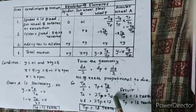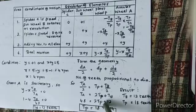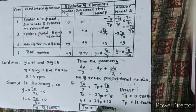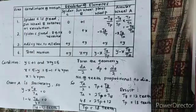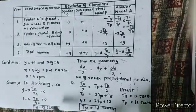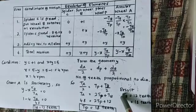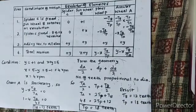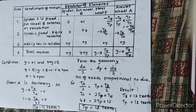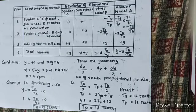TA equals 2TP plus TP. So 48 equals 2TP plus 12. We get the teeth for planet P and sun wheel B. Result: TP = 12 teeth. So this is an easy problem. I think you people have better understanding now. Thank you.